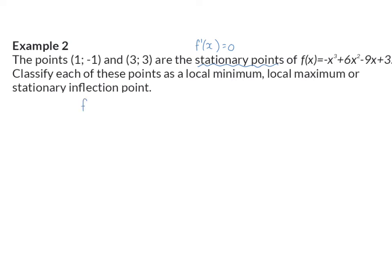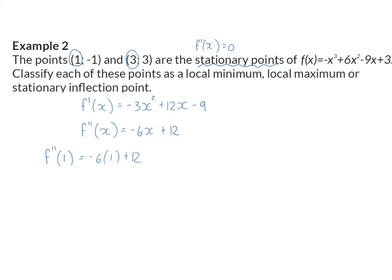We start by calculating the first derivative so that we can differentiate again to find the second derivative. We already know that our two x values of our stationary points are 1 and 3, and now we substitute them into the second derivative. Substituting x = 1, we get a value of 6. Since the second derivative at x = 1 equals 6, which is bigger than zero, the point (1, −1) is a local minimum.